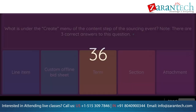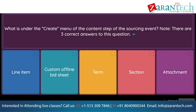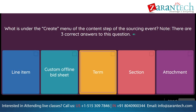Question: What is under the create menu of the content step of the sourcing event? Note, there are three correct answers to this question. Option 1: line item. Option 2: custom offline bid sheet. Option 3: term. Option 4: section. Option 5: attachment.